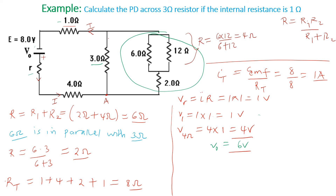Adding those voltages: 1 plus 1 plus 4 equals 6 volts. The PD across the 3-ohm resistor is therefore the EMF of the battery minus the sum of those PDs: 8 minus 6 equals 2 volts. So the PD across the 3-ohm resistor is 2 volts — the remaining voltage distributed across the parallel combination.